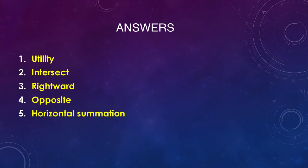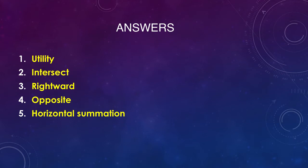Let us now see the answers for the fill in the blanks. First: the want-satisfying capacity of a commodity is utility. Second: two indifference curves never intersect each other because indifference curves will always move higher rightwards or lower leftwards — if they intersect, it gives an absurd result because both curves would then have a common combination, which is not possible. Third: as income increases, the demand curve for normal goods shifts towards the right — so the answer is rightwards. If income increases, the consumer will purchase more of the commodity at the prevailing prices.